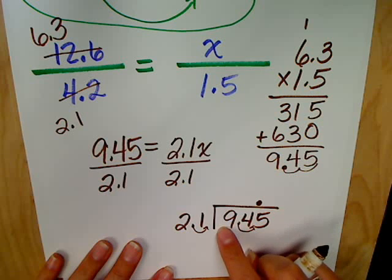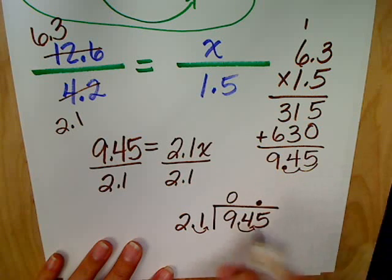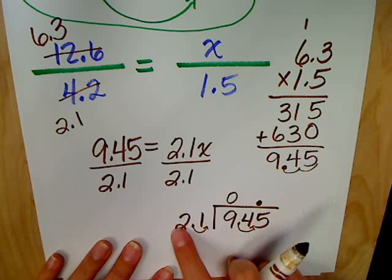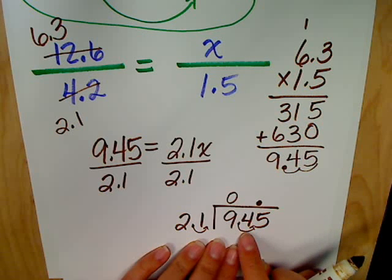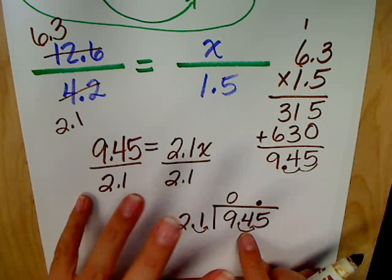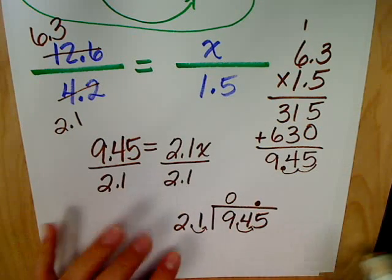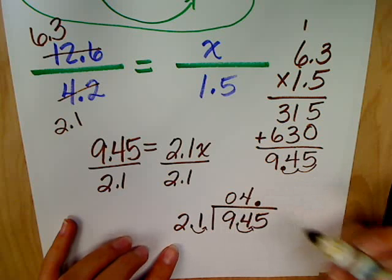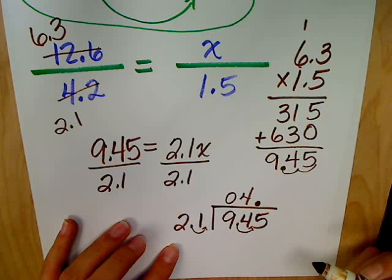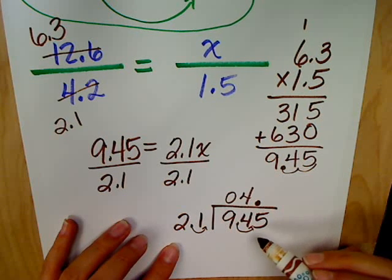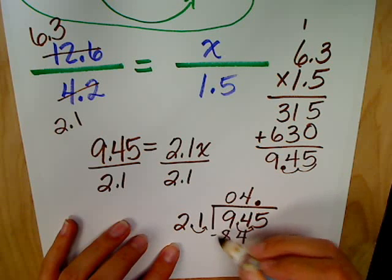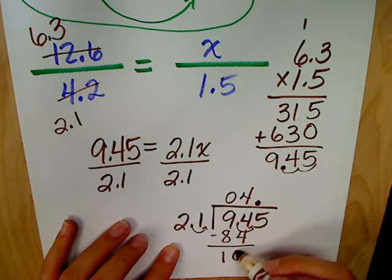All right. Twenty-one goes into nine how many times? Zero. Zero times because the question was 21 into nine. But 21 into 94? Four. We can estimate two, four, six, eight, probably only four times. So, four times 21 is? Tony? Eighty-four. Good. Eighty-four.